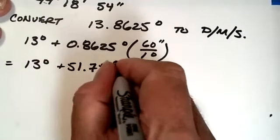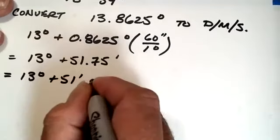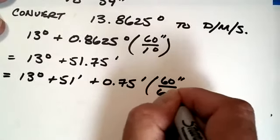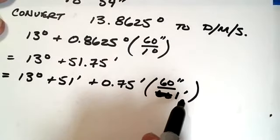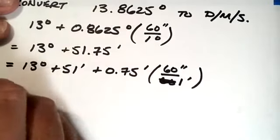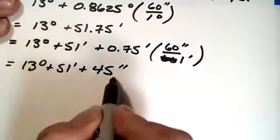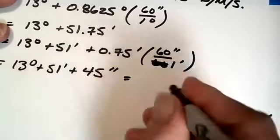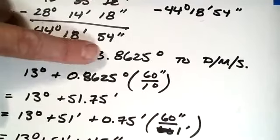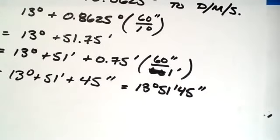So now I have another decimal, but this is now in a new unit, which is minutes. So I do the same thing all over again. I've got 13 degrees plus 51 minutes plus 0.75 minutes. And then I do the conversion to seconds. So this is 60 seconds divided by one minute. The unit I want to get into divided by the unit I want to get out of. And this is a pretty simple calculation. This actually is 45. So this ends up being 13 degrees, 51 minutes and 45 seconds. So there's the conversion from decimal degrees to degrees, minutes, seconds. And this process is repeated over and over again.